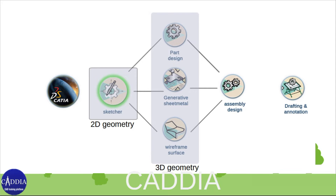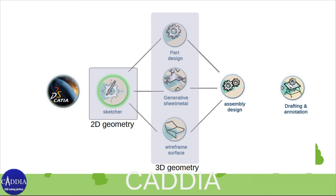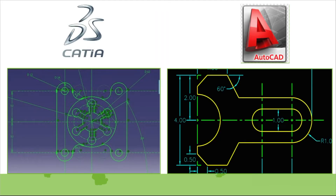You will start learning CATIA from the 2D geometry module — the Sketcher. In this module we will create 2D geometry. That geometry will work as an ingredient for all 3D design modules. That's why we will start learning CATIA from this module. This module is also very easy and similar to AutoCAD.